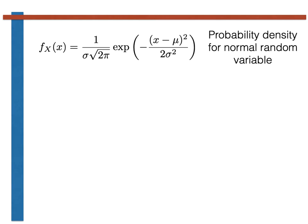Before we get onto those derivations, let's first calculate the integral of the probability density function over all space by evaluating the integral on the right-hand side of the expression shown here. We know that this integral should be equal to 1, as f(x) is a probability density function and the integral over all space of a probability density function is equal to 1. By showing this integral is equal to 1, we will confirm that our expression for the probability density function of a normal random variable is a correct probability density function.